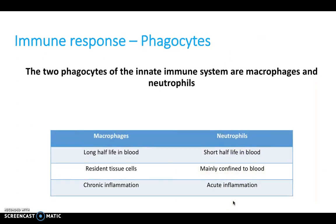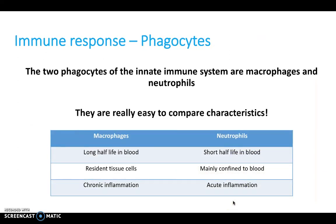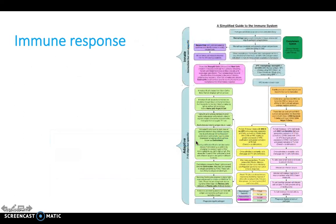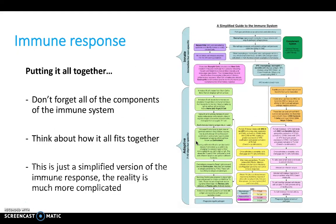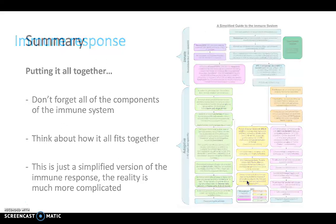Regarding phagocytes — the two phagocytes of the innate immune system, macrophages and neutrophils — they're easy to compare characteristics and therefore make great exam questions. Put it all together and this diagram summarizes the whole innate and adaptive immune response.